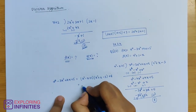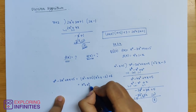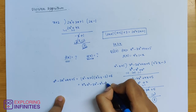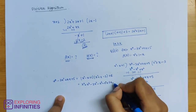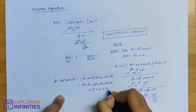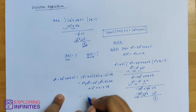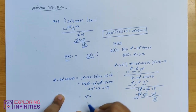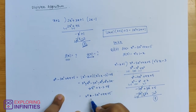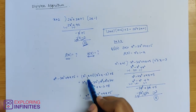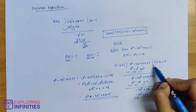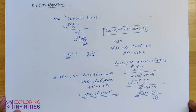So the result is: x power 4 minus 3x square plus 4x plus 5 equals x square minus x plus 1, into x square plus x minus 3, plus remainder 8. This is correct. We verify: divisor into quotient plus remainder equals dividend.